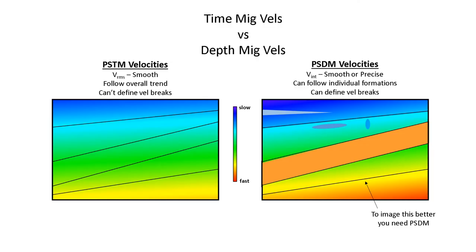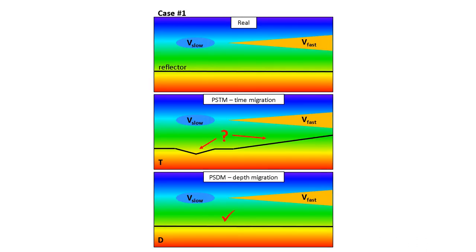The differences between velocities used for time migration compared to velocities used for depth migration. Why we want to do depth migration so that we can image more accurately in the subsurface because there can be errors in time migration results.